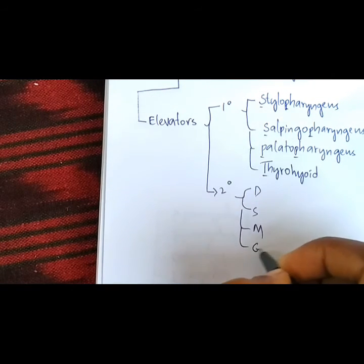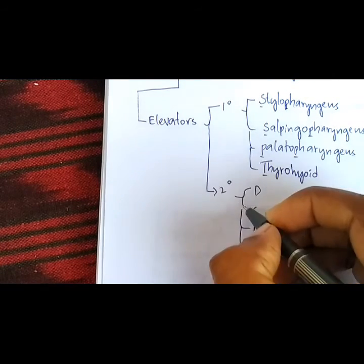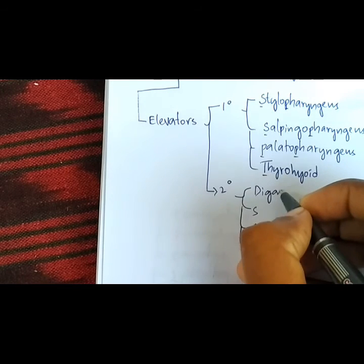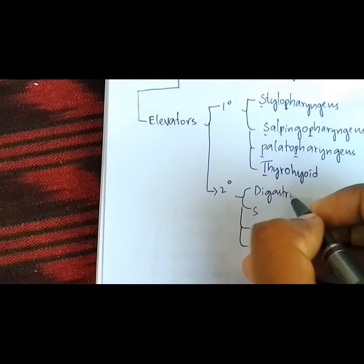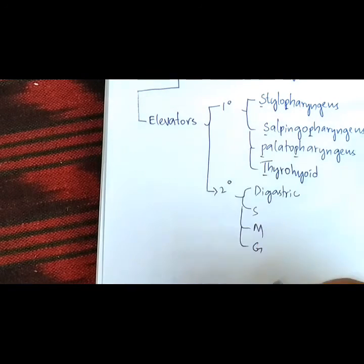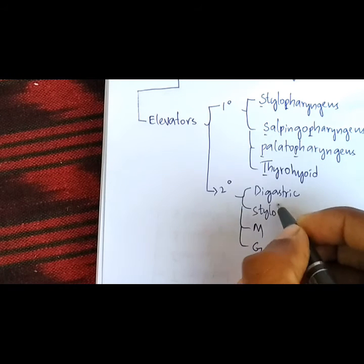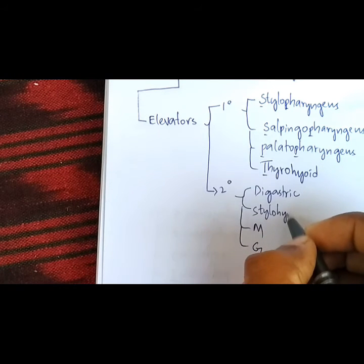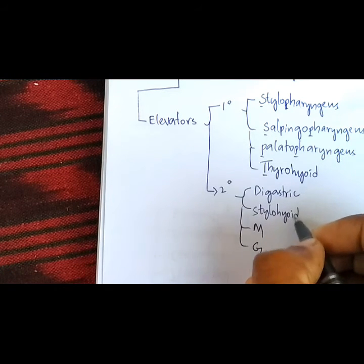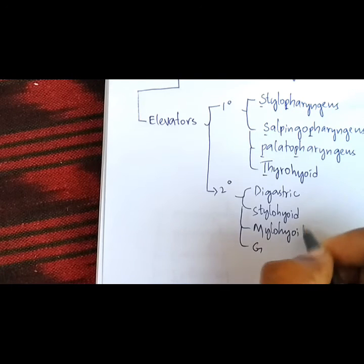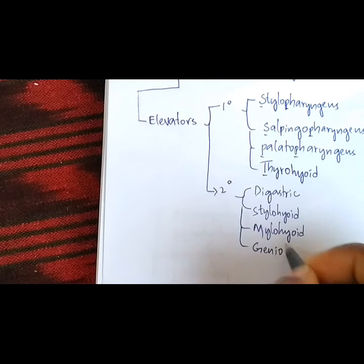The DSMG are: digastric, stylohyoid, mylohyoid and geniohyoid.